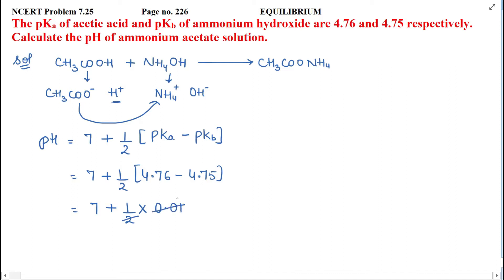7 plus half into 4.76 minus 4.75 that will be 0.01. Then when you solve this, you will get 0.005. So 7 plus 0.005 equal to 7.005. This solution has a pH of 7.005.